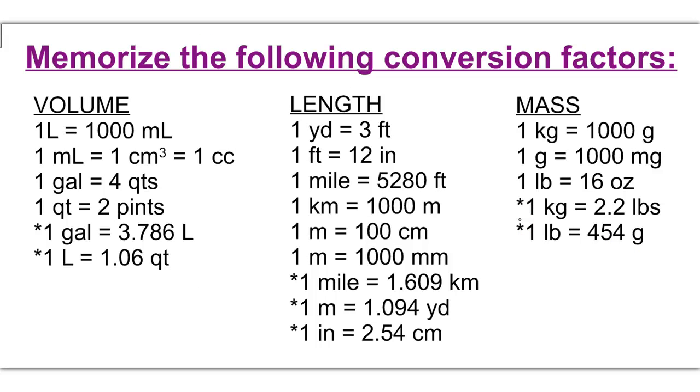So these are conversion factors that you'll be asked to memorize. And you'll notice that there are several conversion factors with an asterisk next to them, like this right here. So let me break down the chart for you. Everything checked off in red is a metric conversion. And everything checked off in blue is an English conversion.